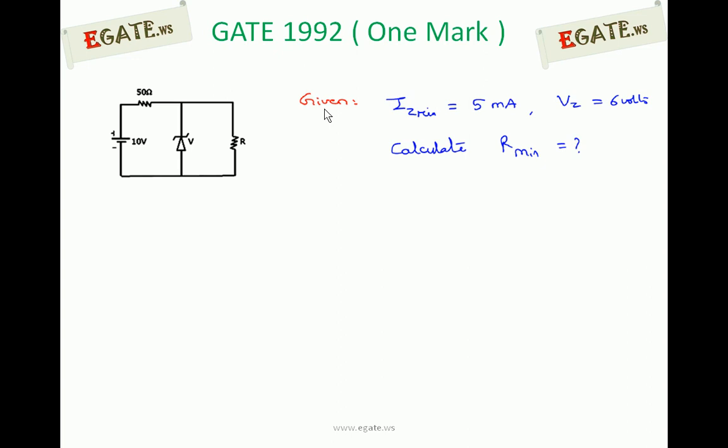This is the given circuit. Given IZ minimum, that is knee current of Zener diode, also treated as minimum Zener current required to keep the Zener diode working as voltage regulator. So IZ minimum equals 5mA, VZ Zener voltage is given as 6V. We need to calculate R minimum.